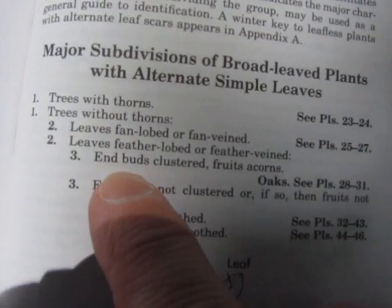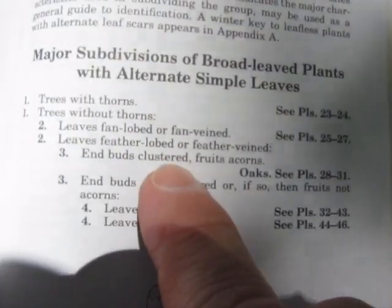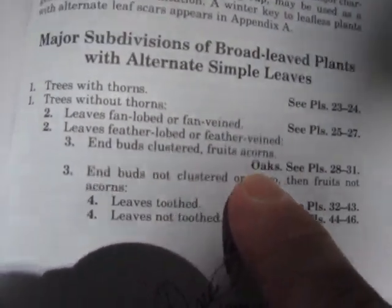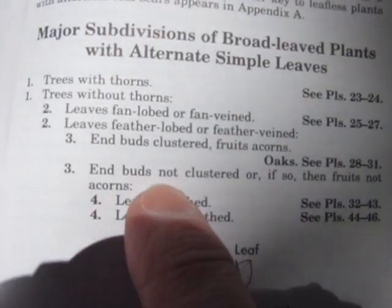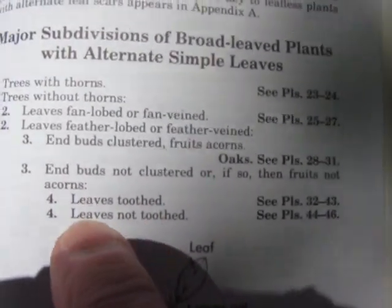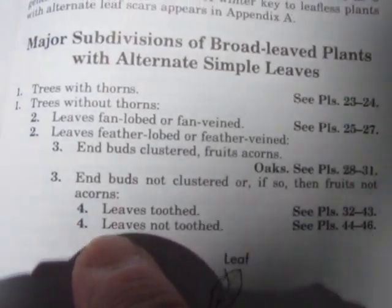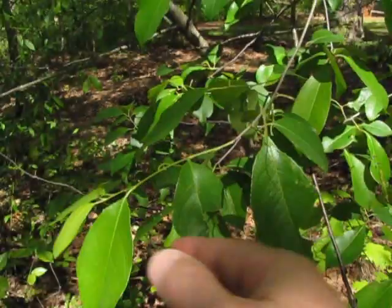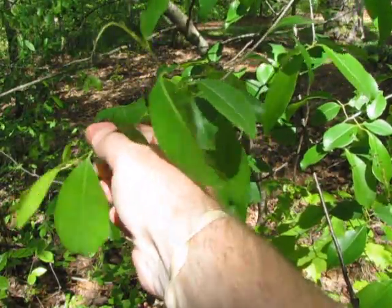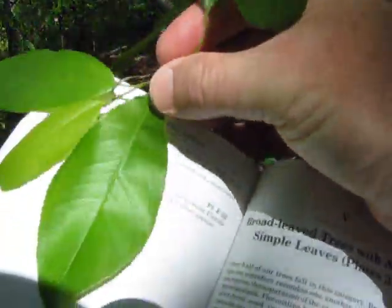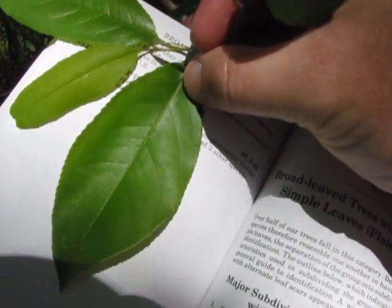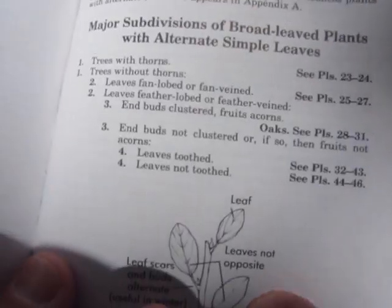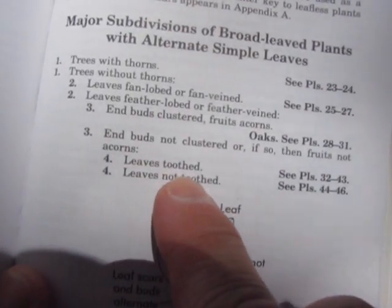Moving on to number three: buds clustered with fruits as acorns — that would be the oaks. Since we read the beginning of the book, we know that we have buds not clustered. So we move on to number four: leaves toothed or leaves not toothed. If you take a look at the leaf of our tree, you can see that along the margin of the leaf it has teeth. Number four: leaves toothed.